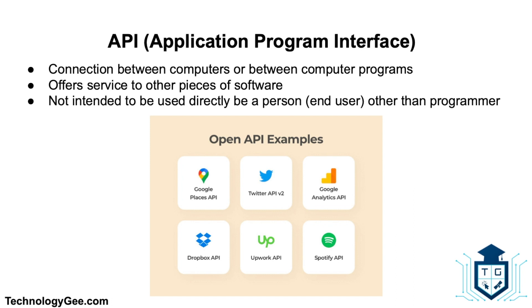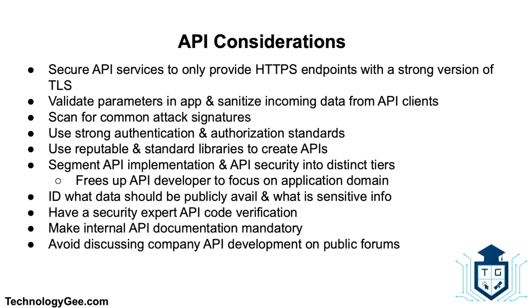Then we have API considerations. An API, or Application Program Interface, is a connection between computers or between computer programs. It is a type of software interface offering a service to other pieces of software. In contrast to a user interface, which connects a computer to a person, an API connects computers or pieces of software to each other. It is not intended to be used directly by a person or the end user, other than a computer programmer incorporating it into software. Here are some API security considerations you need to know.